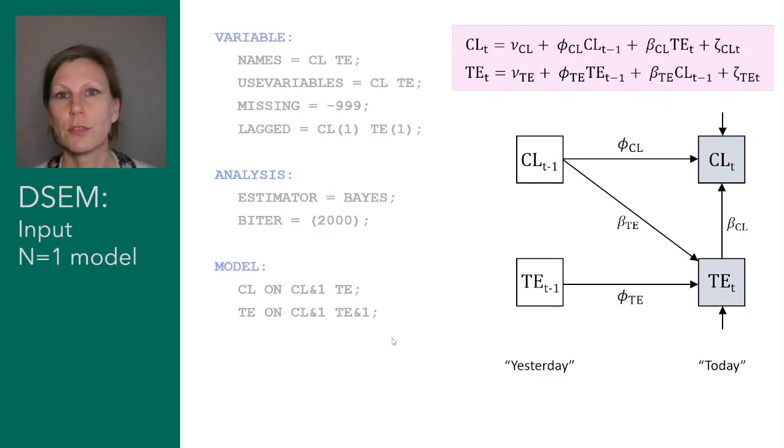We can also include the regression coefficients in our path diagram to even make the connection between the equation and the path diagram stronger. So we see we have the auto regression here. Closeness on itself at the preceding location is this auto regressive parameter phi. It's this parameter that we see in the first regression equation. Or for instance, if we look at the cross-lagged effects of closeness yesterday on tension today, we see it's this beta coefficient here, which we see in the regression equation over here.